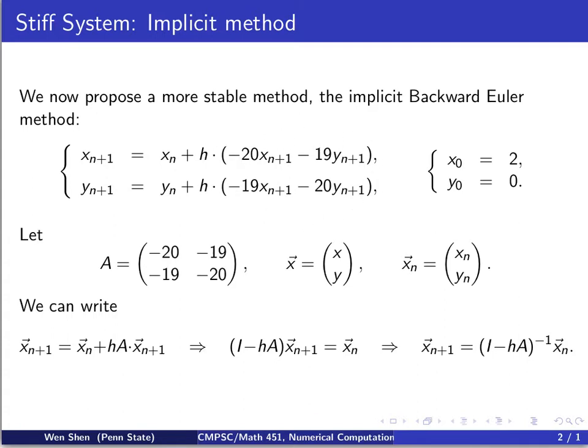So solving this for X_{N plus 1}, moving this to the left, I can write this like that, where this is an identity matrix, I minus H times A. Then I can multiply both sides by the inverse of this matrix, and formally write out X at N plus 1 is the inverse of this matrix times X_n.